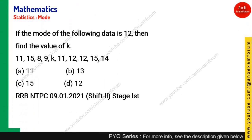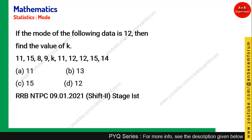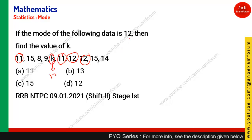The next question looks difficult but is very simple. If the mode of the following data is 12, find the value of k. Since the highest frequency corresponds to the mode, 12 must occur the maximum number of times. Looking at the data, 11 has come two times and 12 has come two times. Since 12 is stated to be the mode, k must equal 12 so that 12 has the strictly highest frequency. Therefore option D is the correct answer.